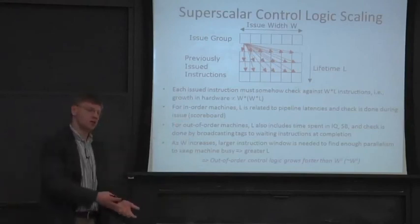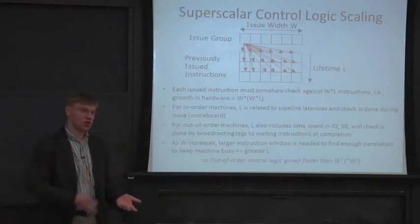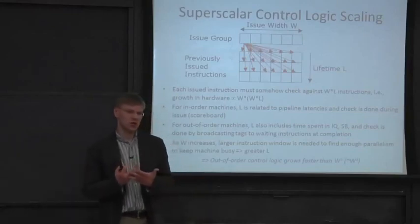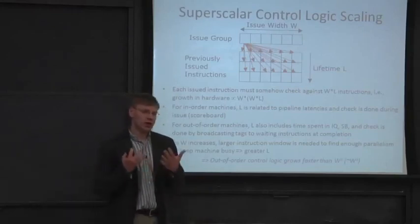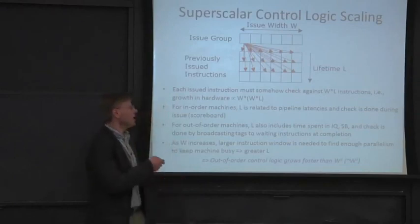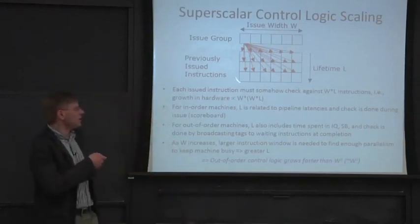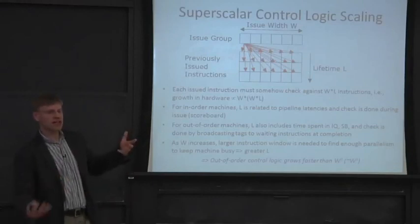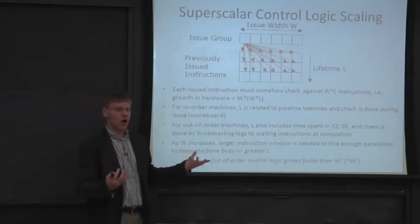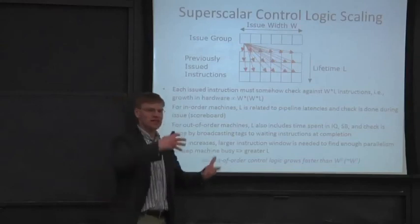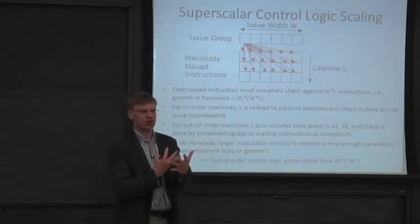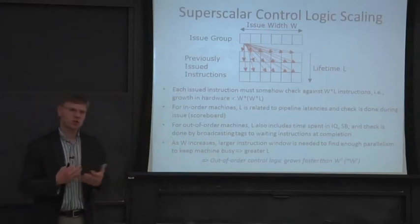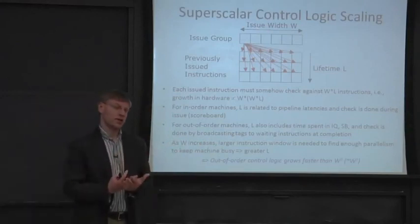You've already broadcast results back to either your reservation station or your instruction queue to issue further instructions. If you think about the complexity of what you're really doing when you try to issue an instruction, you're taking these in-flight instructions and looking up against them — or in your instruction window — all of the instructions when they complete against basically all the registers. We built some structures that make this so you don't have to do a full all-to-all check.